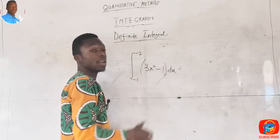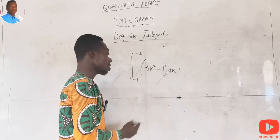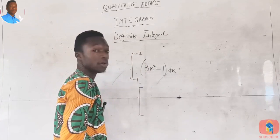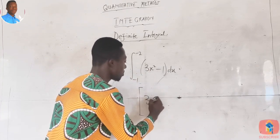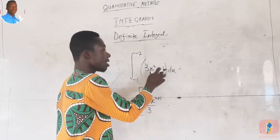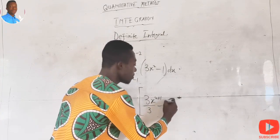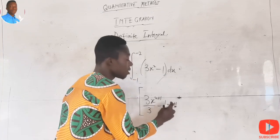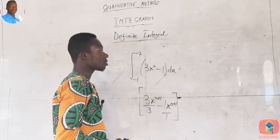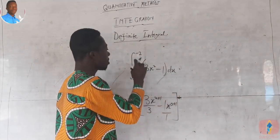Since it is a function in subtraction form, we integrate term by term. Integrating 3x² gives us 3x^(2+1) divided by 3, which simplifies. Then negative one can be written as negative x to the power of zero, so integrating that gives x^(0+1) divided by 1. We place the result in brackets, indicating that the limits will be substituted.